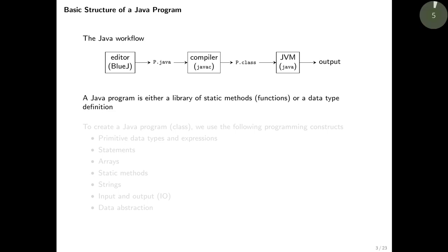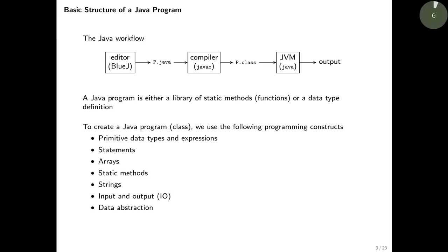A Java program is going to be either a library of static methods or functions, or it's going to be a data type definition. In this lecture, we're going to focus on writing Java programs as libraries of static methods, and in the following lecture we will discuss data type definitions. To create a Java program, we use seven programming constructs. In this lecture we'll focus on the first six, and save data abstraction for the following lecture.